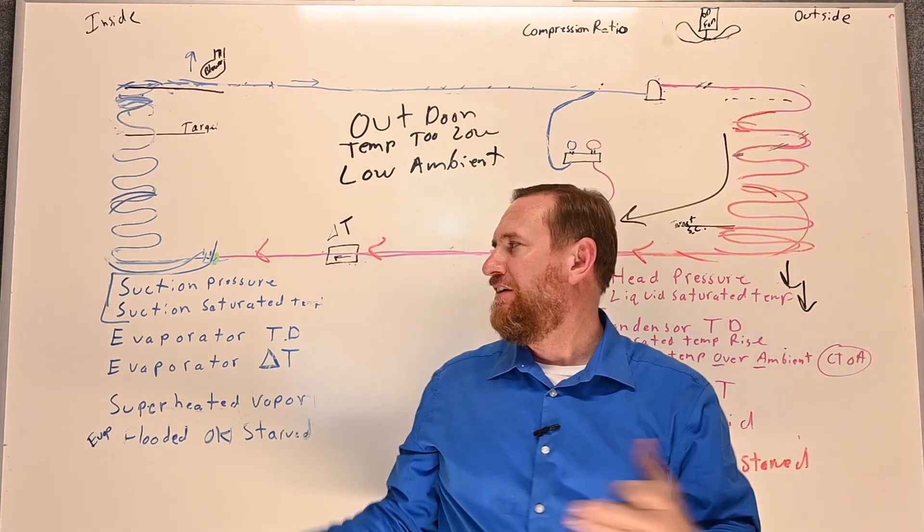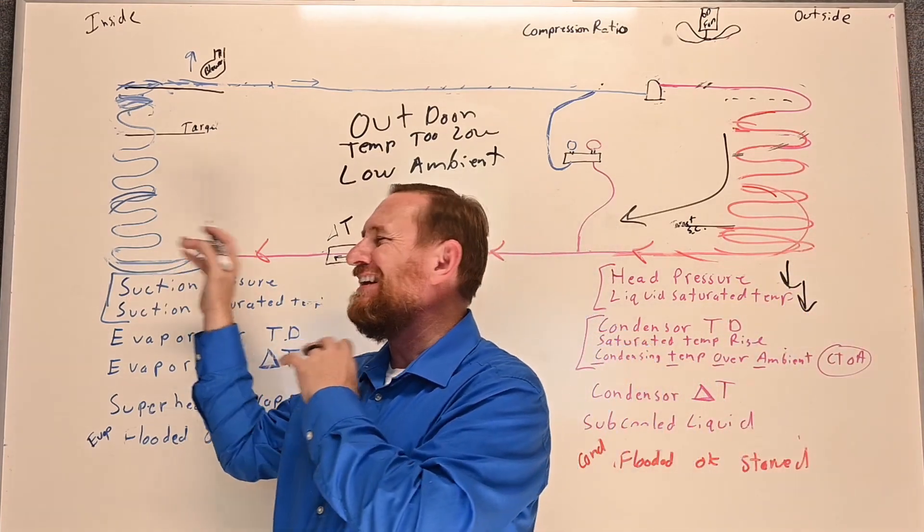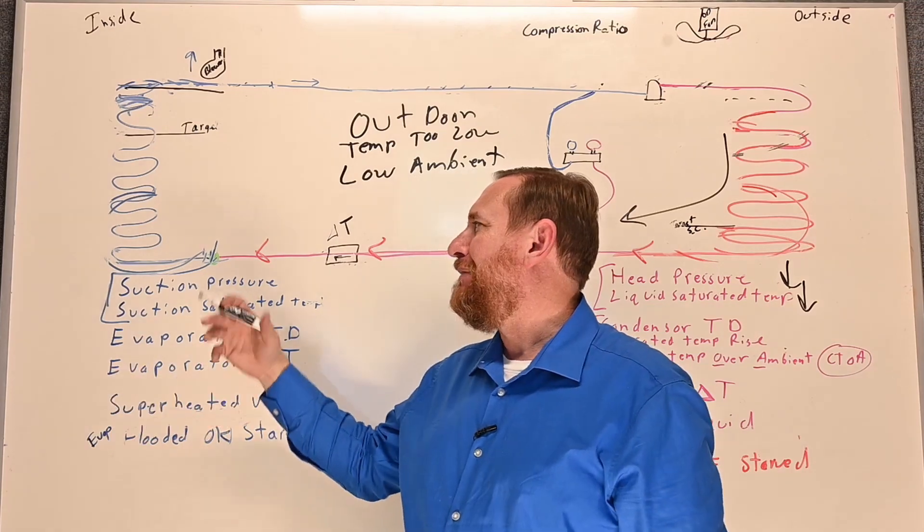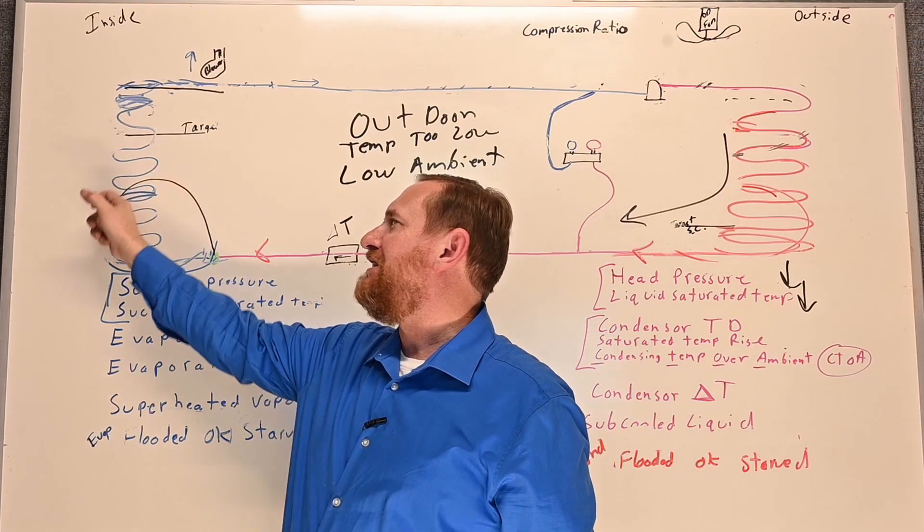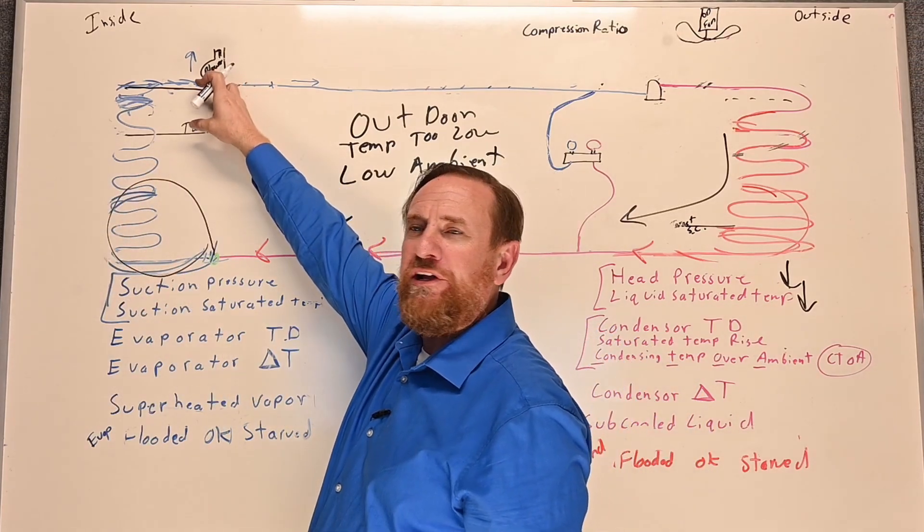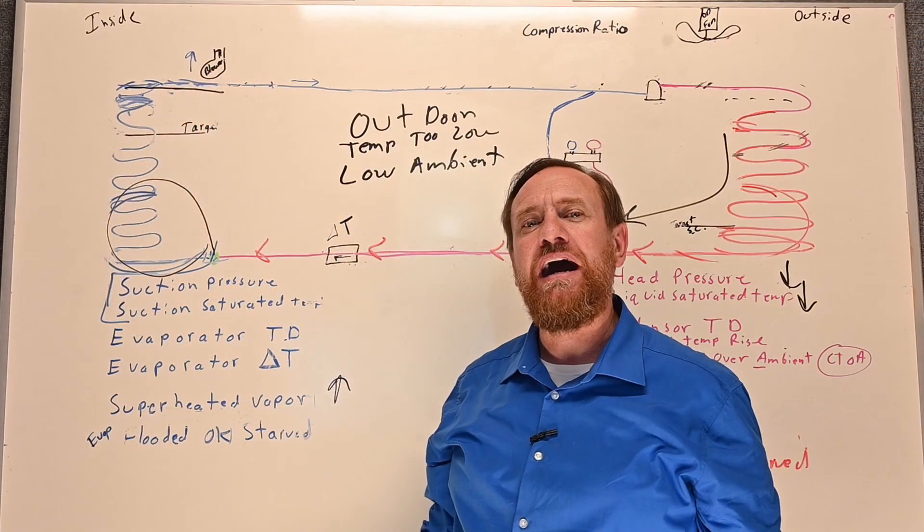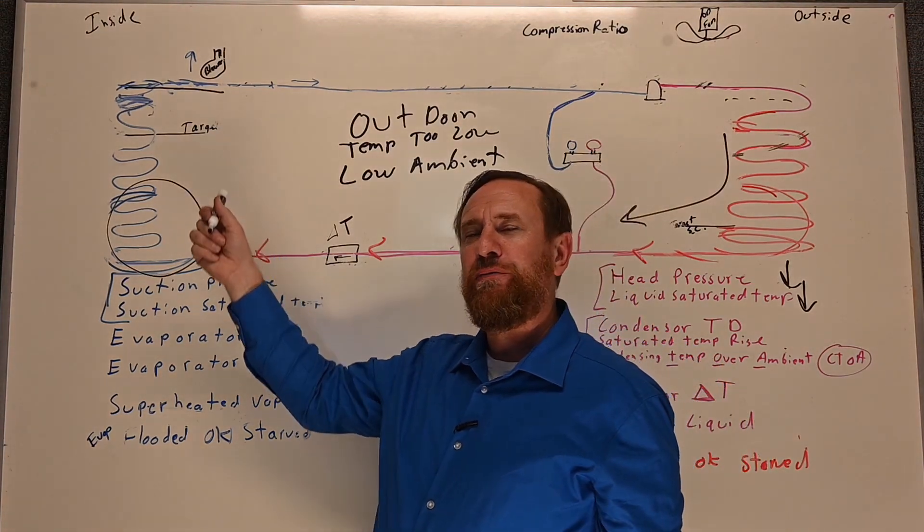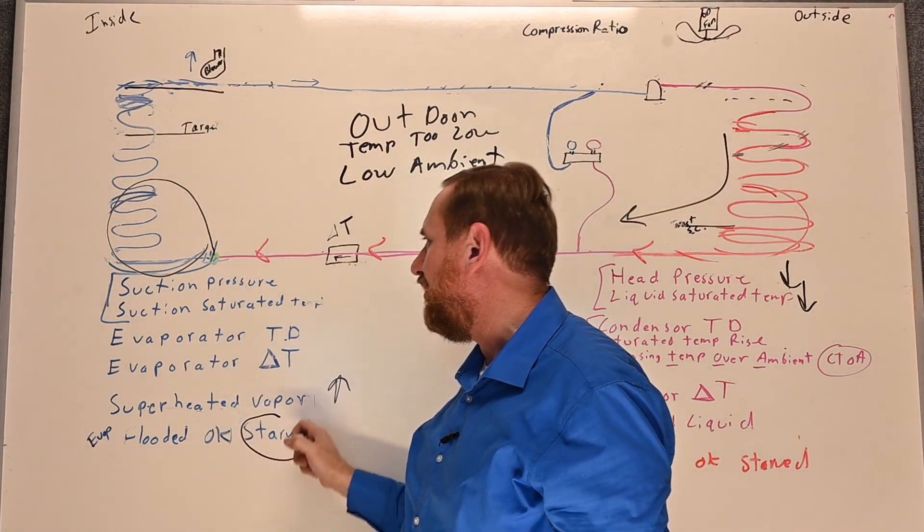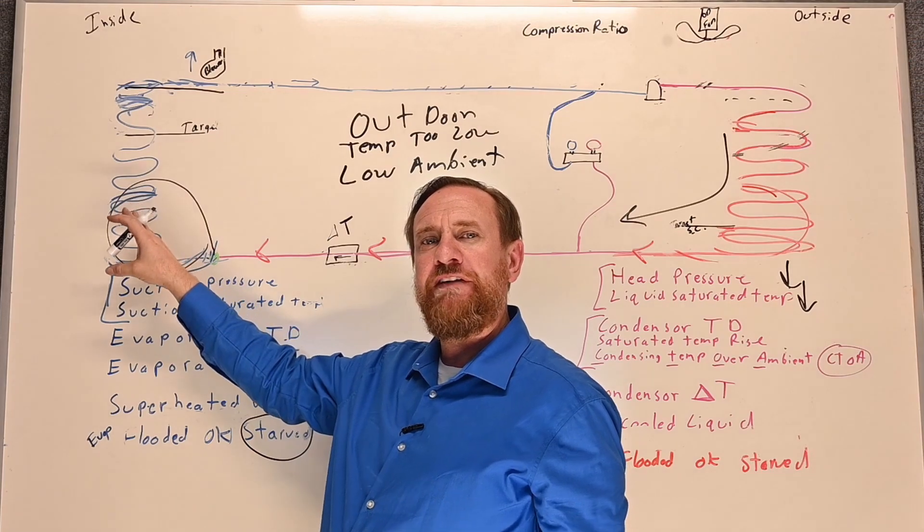So if the pressure is not high enough out here, I'm not pushing enough liquid refrigerant into my evaporator coil. That means I may not be able to absorb as much heat as I want to. Maybe I wanted this much superheated vapor, but I have too much superheated vapor. So our superheated vapor will go higher. Because of a higher amount of superheated vapor, we end up with a starved evaporator coil, not enough refrigerant in my evaporator coil.